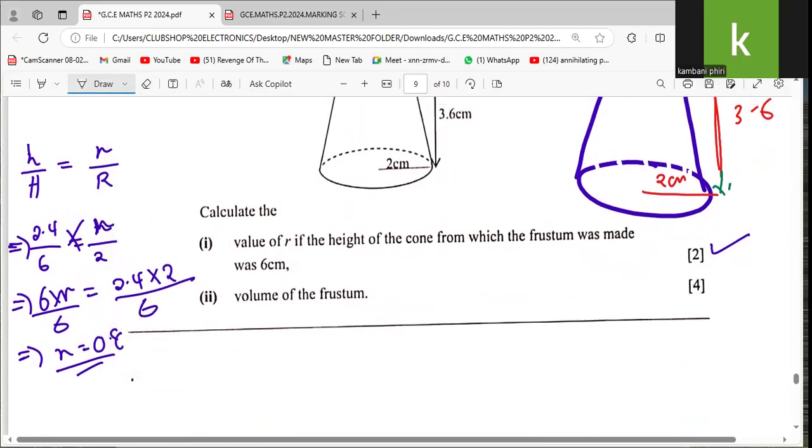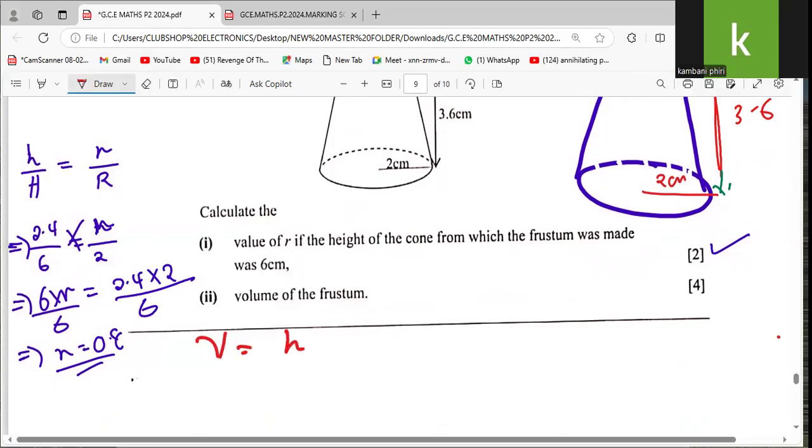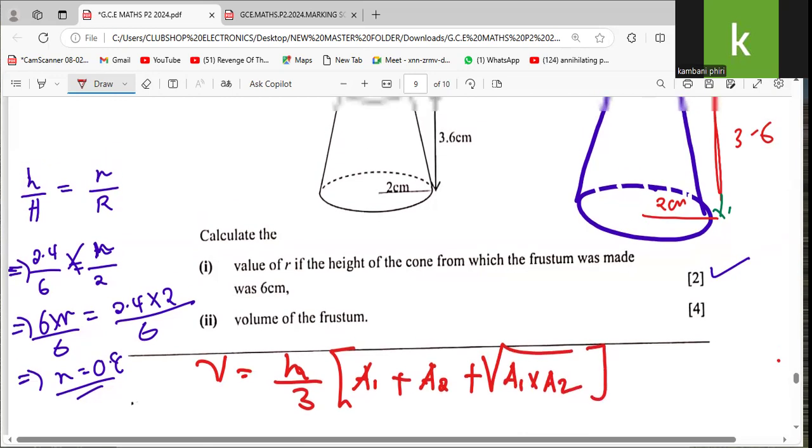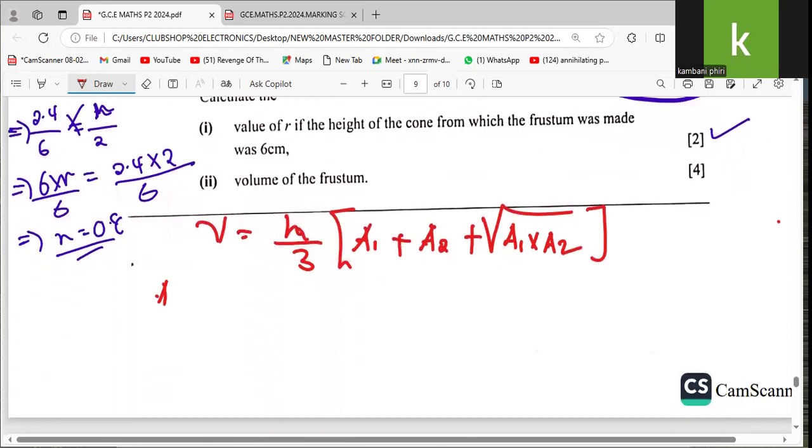Now we want to find the volume of the frustum. The volume equals height divided by 3, times the area of the top part plus the area of the bottom part plus the square root of area 1 times area 2. The top part is a circle, so we'll find the area. The area of a circle is πr². We'll take π at 3.142, then radius 0.8. So A1 = πr² = 3.142 × 0.8² = 2.01088.